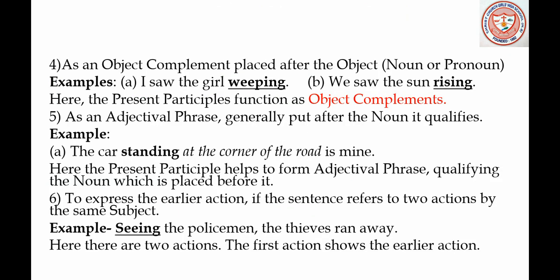As an object complement placed after the object — that is, a noun or pronoun. Examples: 'I saw the girl weeping.' 'We saw the sun rising.' So 'weeping' and 'rising' are present participles, and in these two sentences the present participles function as object complements.